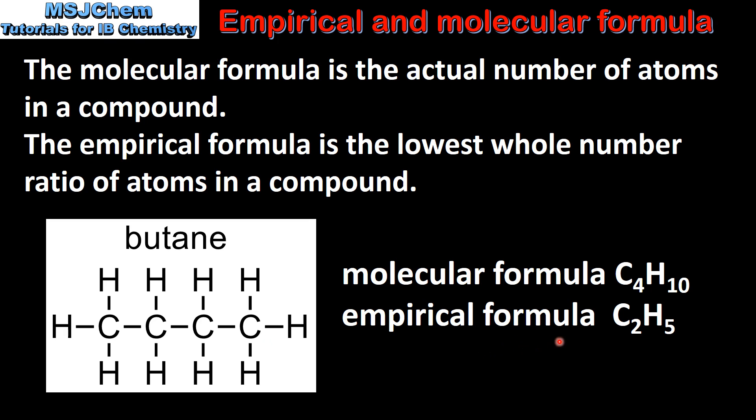The empirical formula for butane is C2H5, which is the lowest whole number ratio of atoms in the compound.